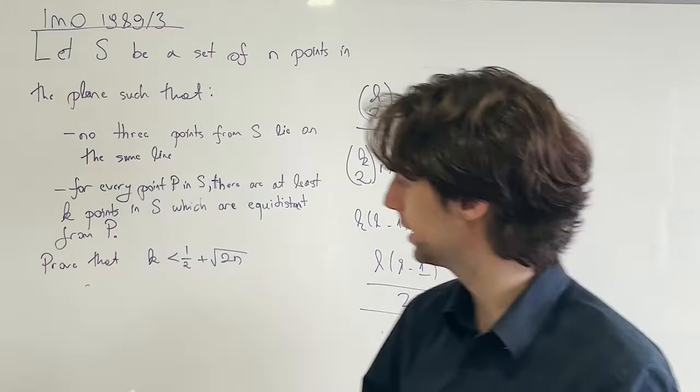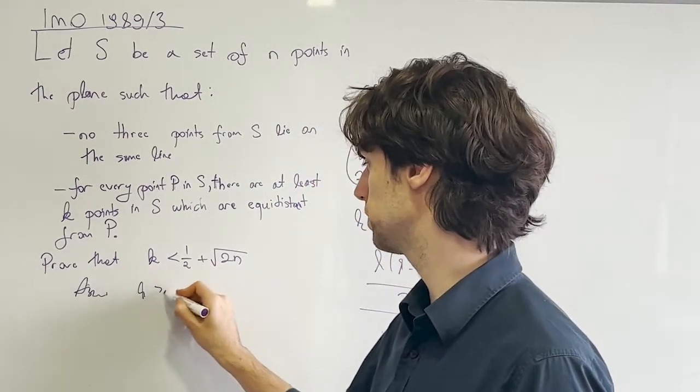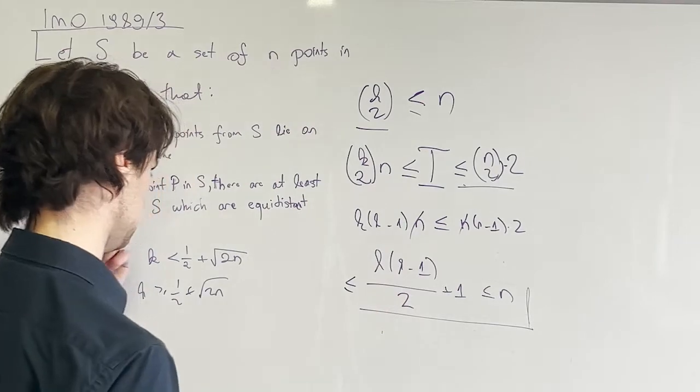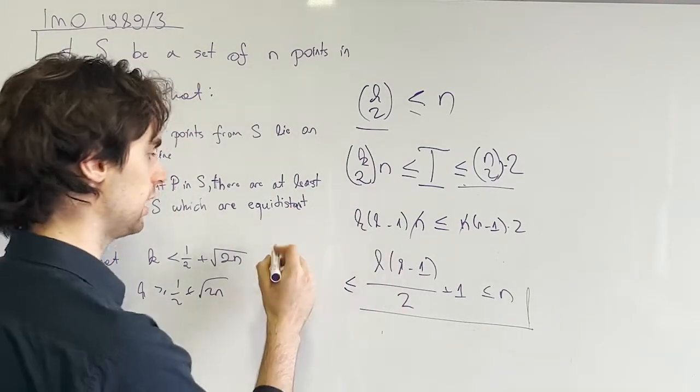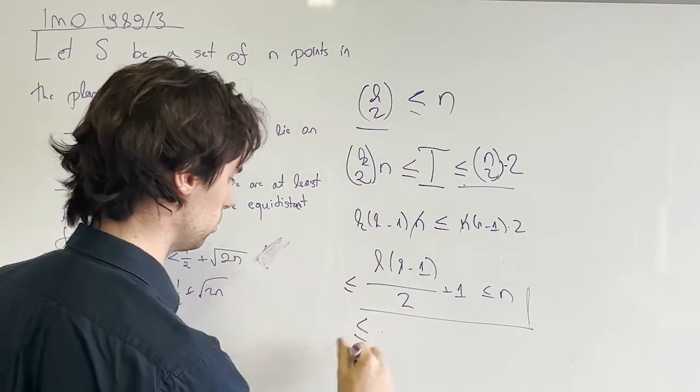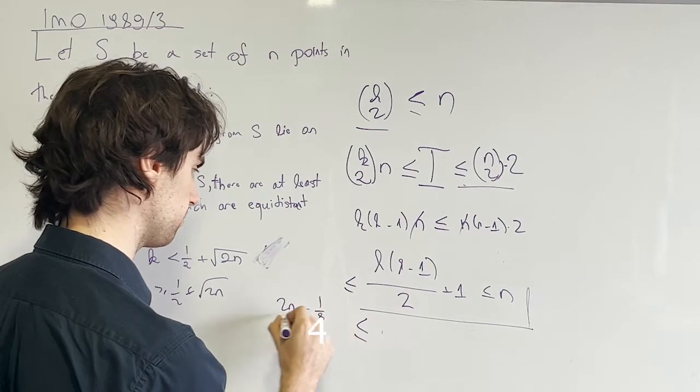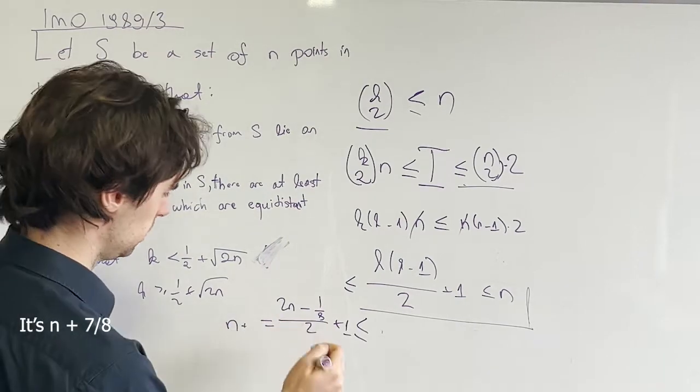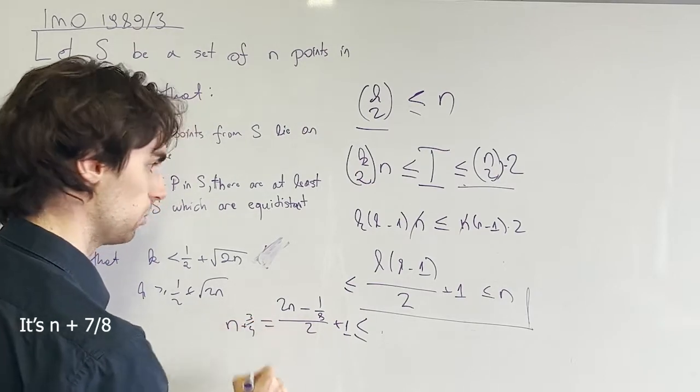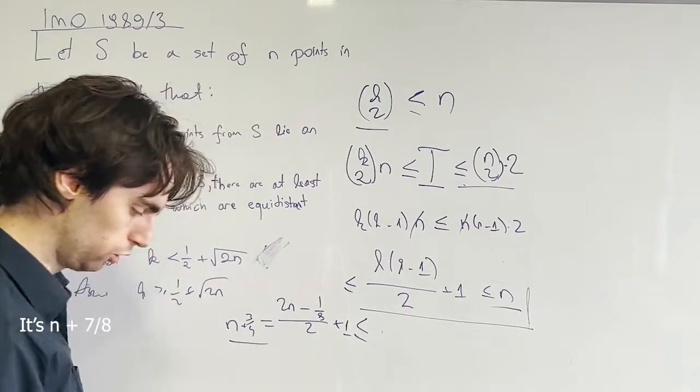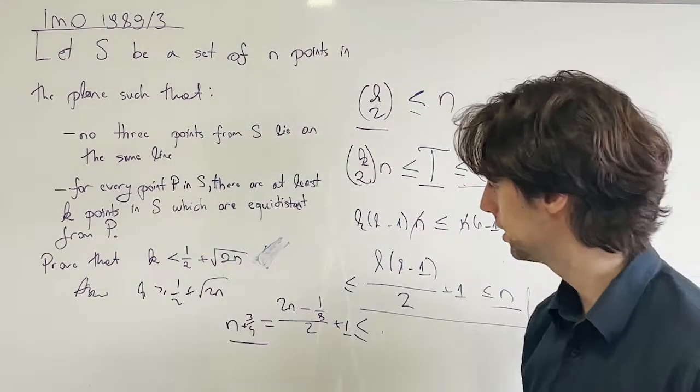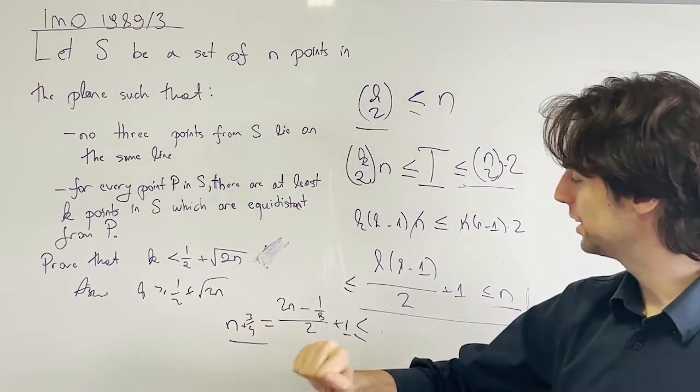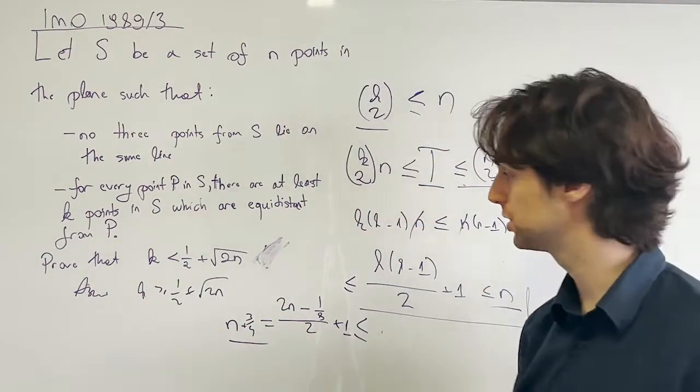And from here, we can finish this problem up by saying assume the contrary. Assume k is greater or equal to a half plus the square root of 2n. And then when we plug that in here, we will get that this is then greater than or equal to 2n minus one eighth over 2 plus 1, which will then be equal to n. So it's going to be n plus 1 minus a fourth n plus three quarters. And this leads us to a contradiction. So this means what? This means that this assumption was false. It's actually not true. And so we know that k needs to be less than a half plus the square root of 2n.